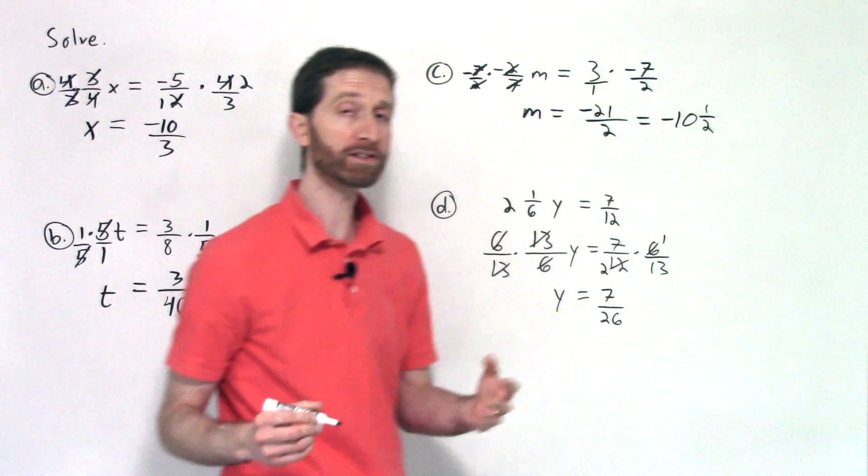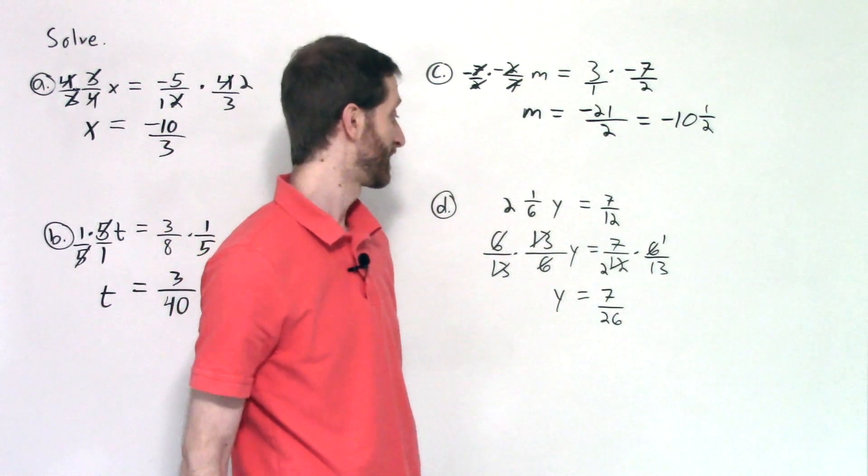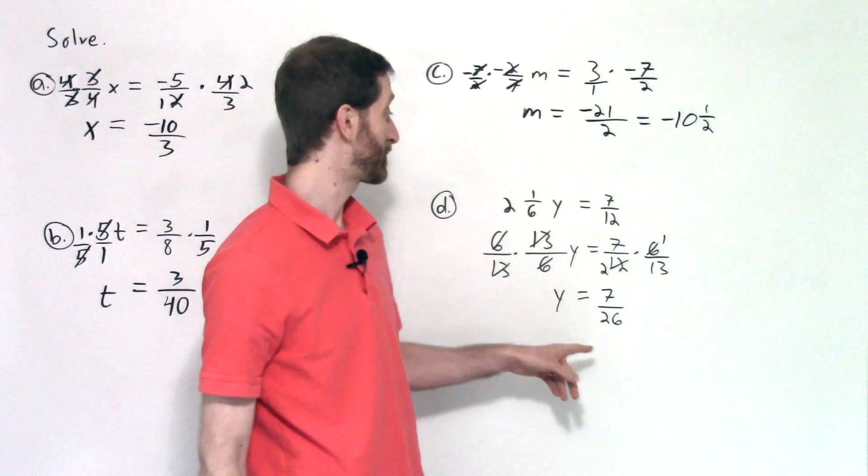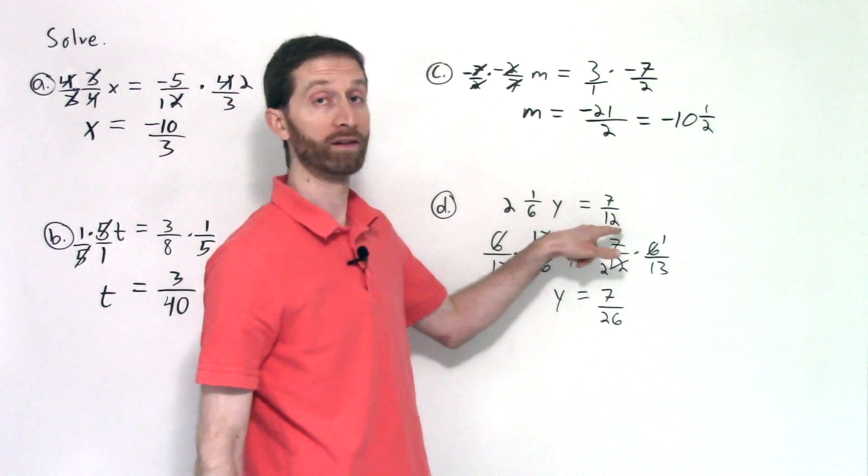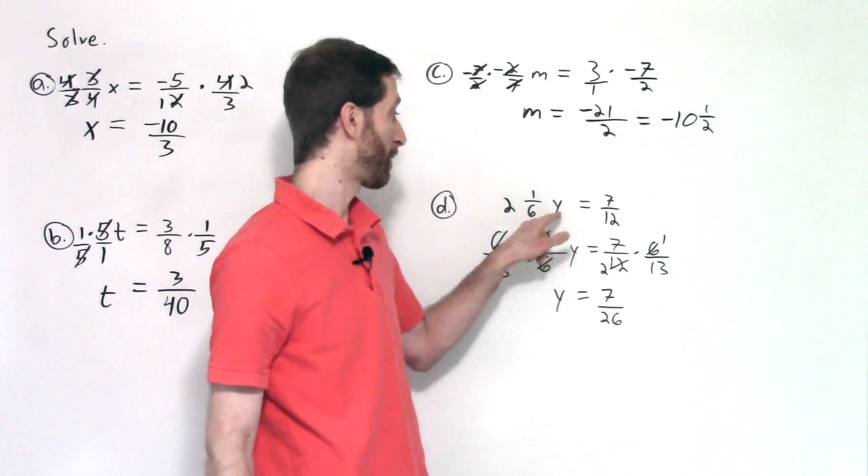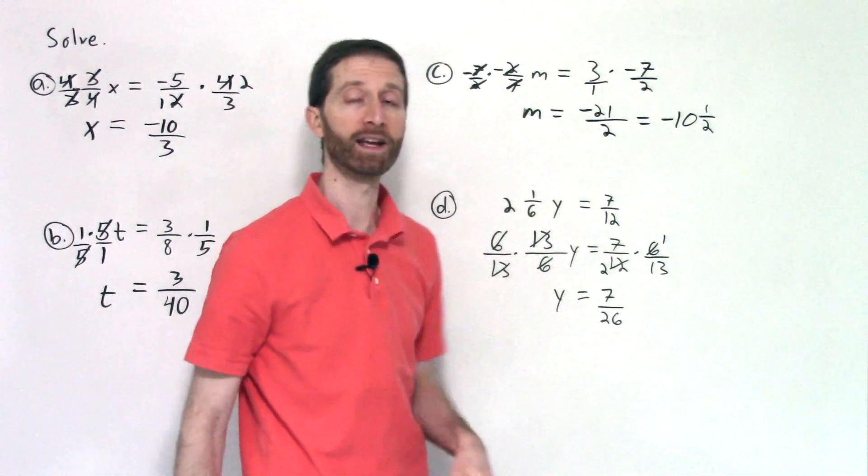So our final answer there, seven 26ths, which makes some numerical sense, right? I've got a number above two and I ended up with a fraction less than one. So we're going to have a relatively small fraction that needs to go in here to get us that final answer.